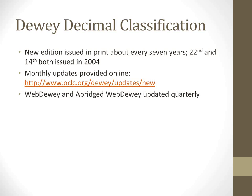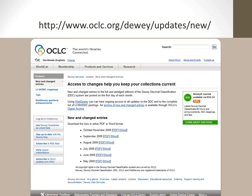A new edition is issued in print about every seven years. Monthly updates are provided online, and the WebDewey online product is updated quarterly. The Dewey Decimal Classification is a product of OCLC. It's not freely available - it's under copyright and is sold either in print or online through OCLC.